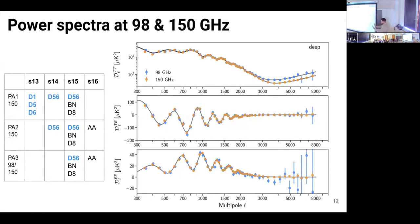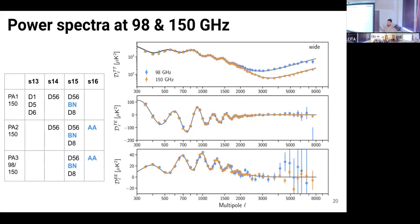We divided the data into two subgroups: what we call 'deep' — all the patches we really went deep on where the noise level is low, observed at 90 and 150 GHz — and the 'wide.' Here you can see the temperature, the polarization, the cross-correlation, and E-mode, with our best-fit theory including foregrounds. It matches amazingly well. This difference here is expected — you have radio sources emitting in the microwave that are much brighter at 98 GHz than 150 GHz, so that's why you see that tail being higher.